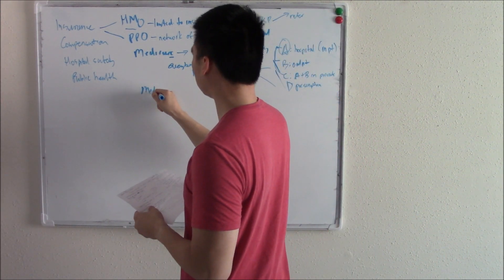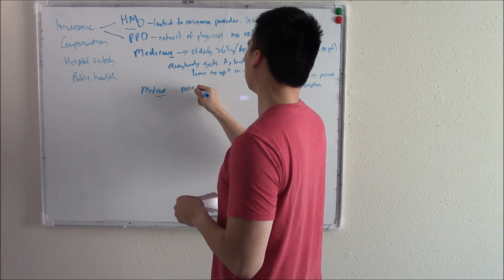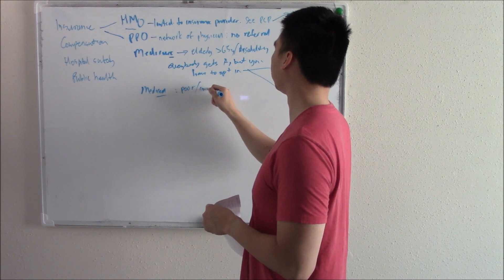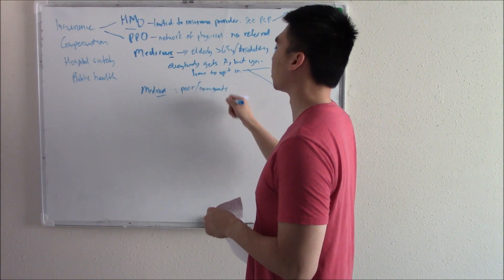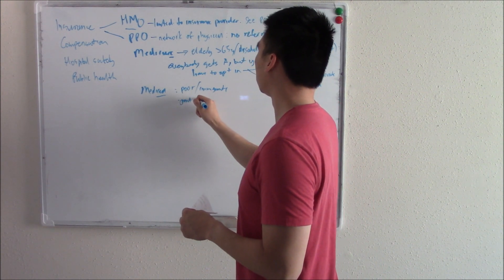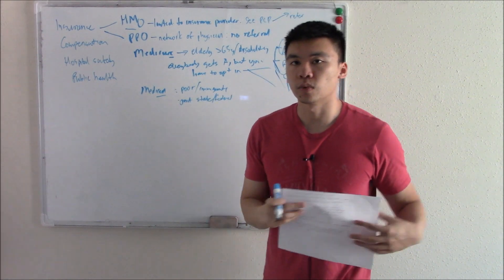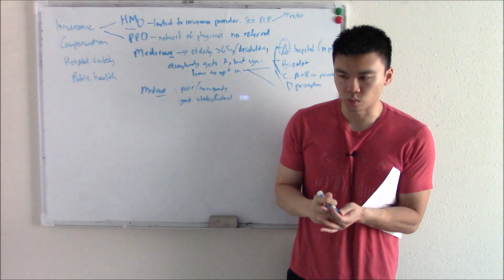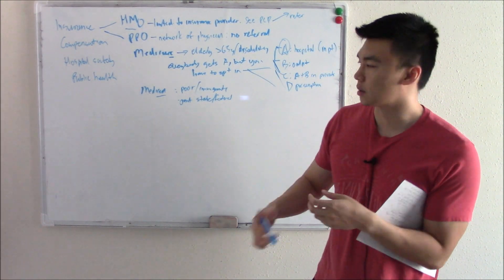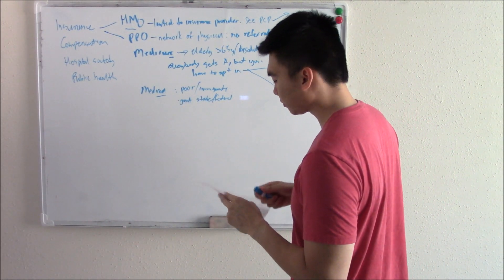Medicaid is for people in lower socioeconomical classes, so poor folks and immigrants or permanent residents. It is a joint state and federal program. So the state has some say in it. You might have heard the news about a state that doesn't want to expand Medicaid, don't want to put more money into Medicaid. They can do that. They have a little bit of rights when it comes to Medicaid. That's insurance.